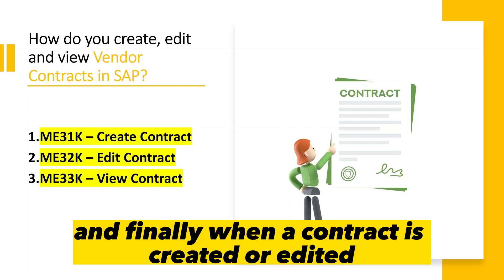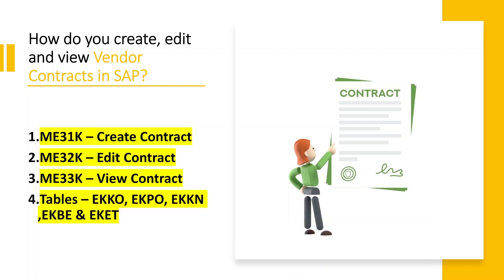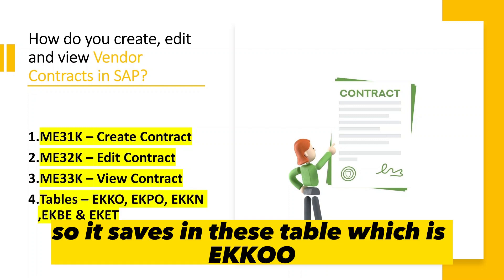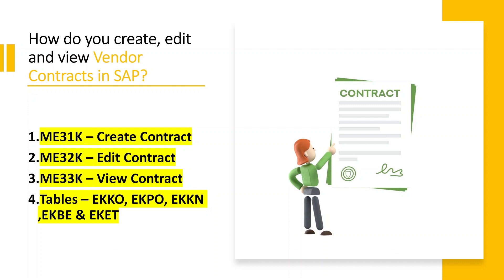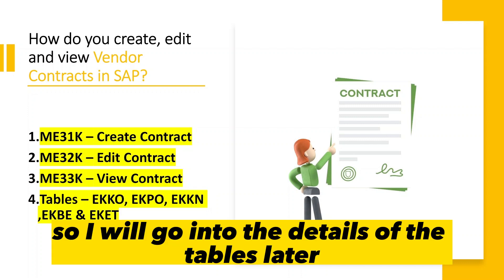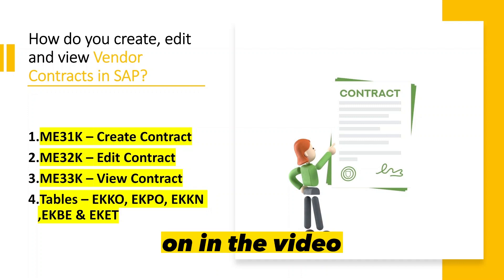When a contract is created or edited, it saves in these tables: EKKO, EKPO, EKKN, EKBE, and EKET. I will go into the details of these tables later on in the video.